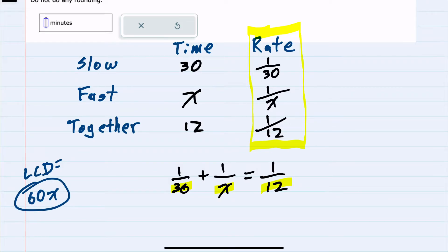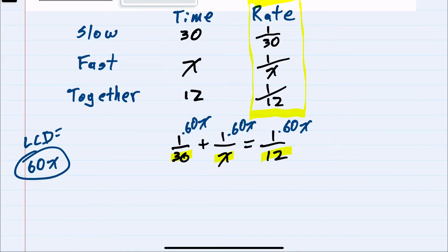I can cancel all of these denominators by multiplying each term on the left by 60x, and each term on the right by 60x. This has the effect of canceling denominators. 30 goes into 60 twice. 1 times 2x is 2x.